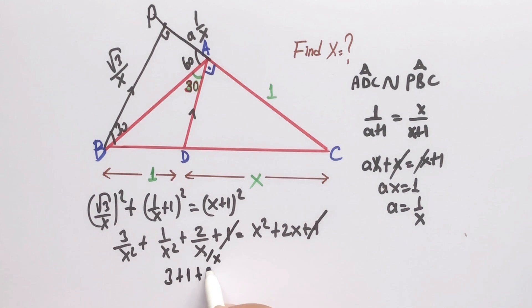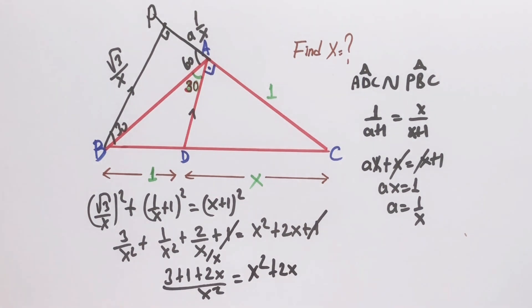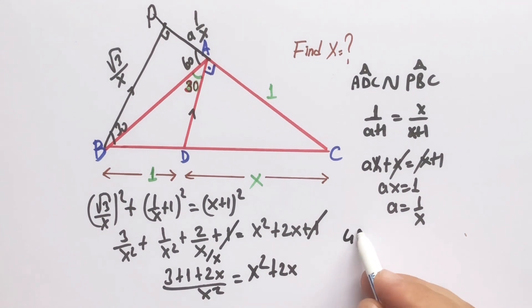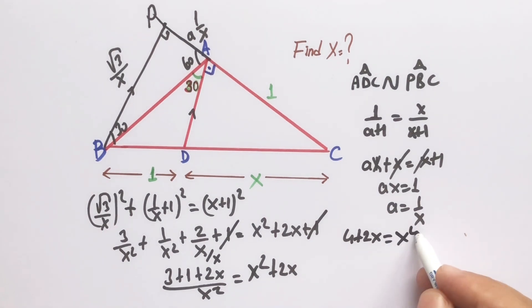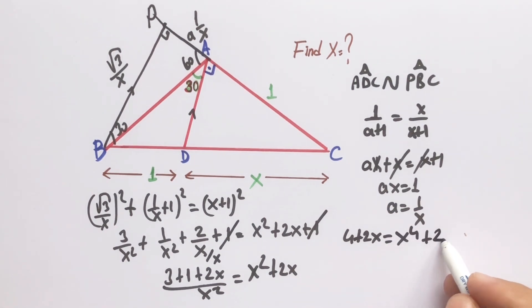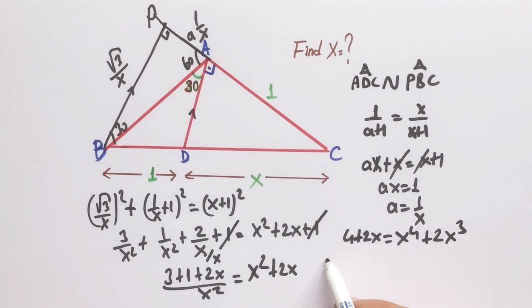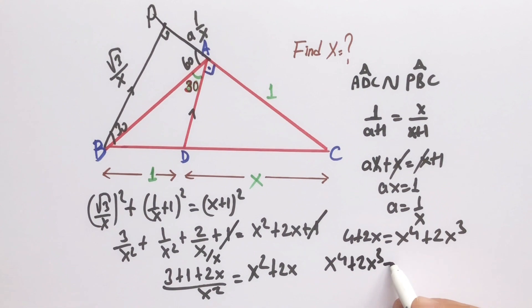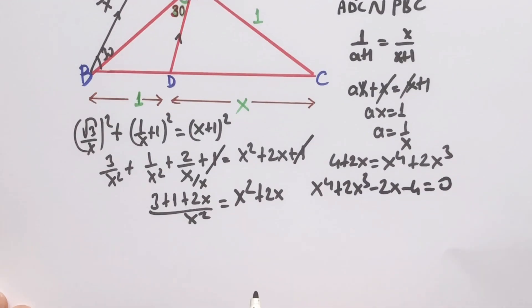Multiplying through by x² gives: 3 + 1 + 2x over x² equals x² + 2x. So: 4 + 2x equals x⁴ + 2x³. Rearranging: x⁴ + 2x³ − 2x − 4 = 0.